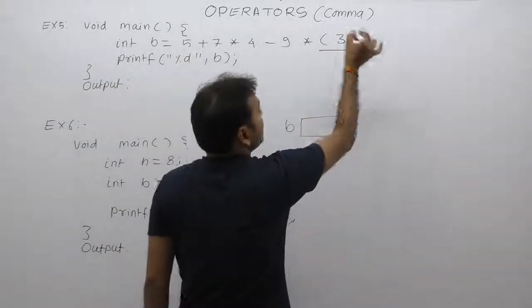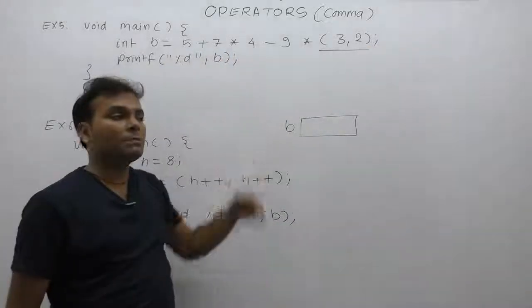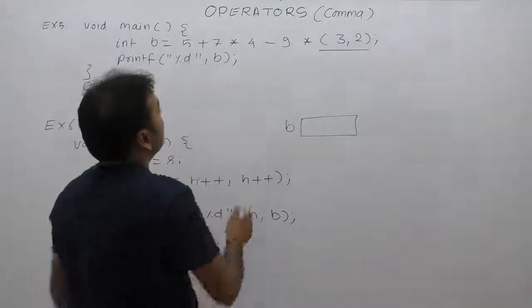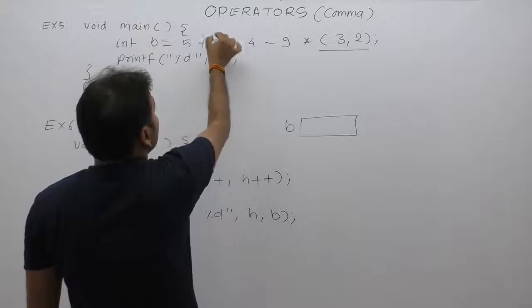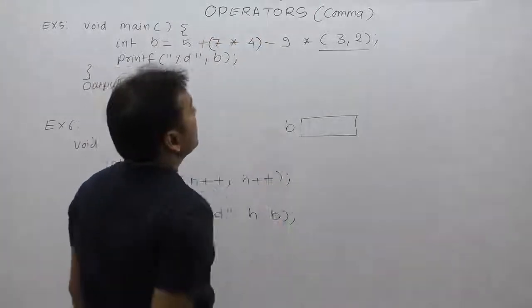Similarly, all these expressions are based on highest priority. Here, highest priority is taken by multiply. Therefore, first of all, this multiply is seven. Second operand is four.